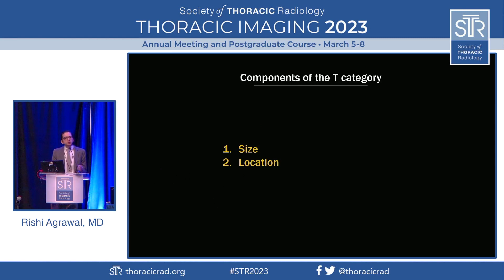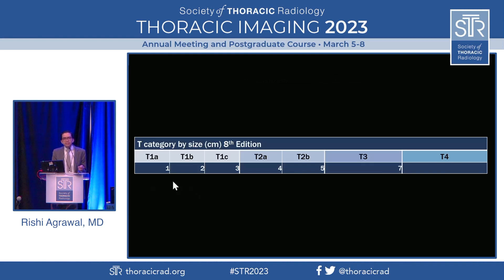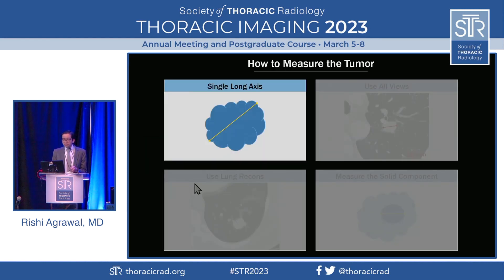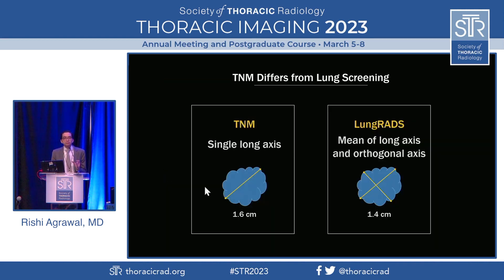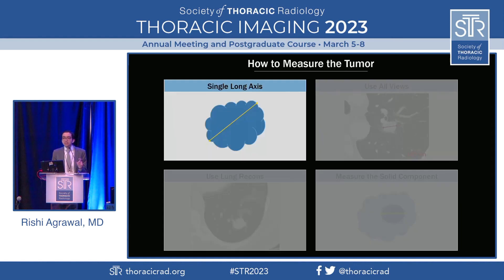The two components of the T category are size and location. Each centimeter increase in size from one to five centimeters gets its own T category. Five to seven centimeters is T3, and seven-plus is T4. T1 is divided into A, B, and C; T2 is divided into A and B. Tumors up to 1.0 cm go to T1a, and 1.1 cm and above go to T1b.